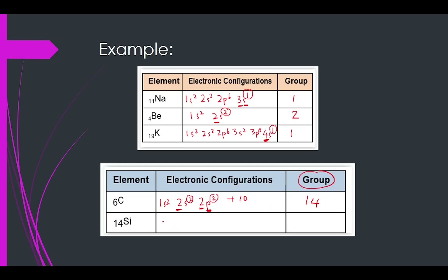For silicon: 1s2, 2s2, 2p6, 3s2, 3p2. Calculating: 6 plus 2 plus 2 is 10; 10 plus 2 is 12; 12 plus 2 is 14. The outermost shell electrons are 3s2 and 3p2, so 2 plus 2 equals 4; adding 10 gives 14. So silicon is also in group 14.